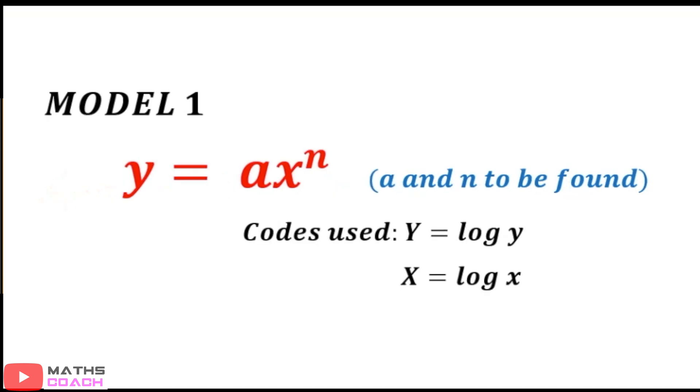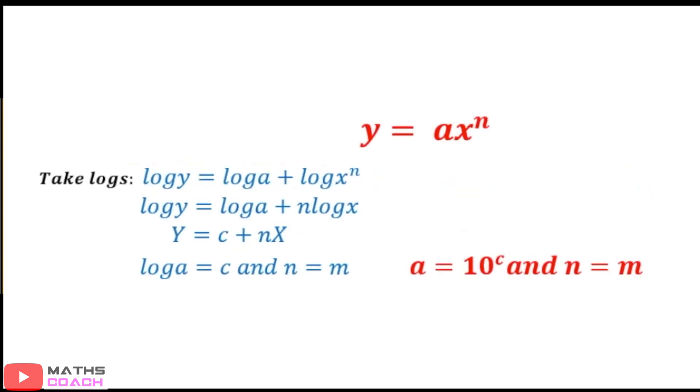Now in this case, model one has a function y equals ax to power n. In this case, a and n are the unknown constants. We have codes used as y equals log of y and x equals log of x. So we're going to look at that function and take logs on both sides. We take logs on both sides, we naturally have log of y equals. Now just be aware here that axn is a product of a times xn. So we can naturally separate that using the laws of logs. So we have log of a plus log xn.